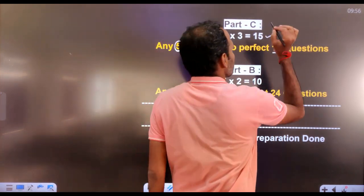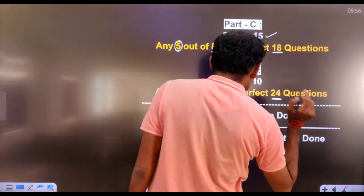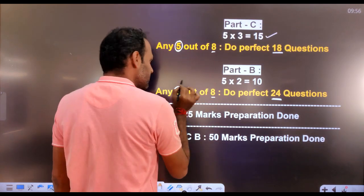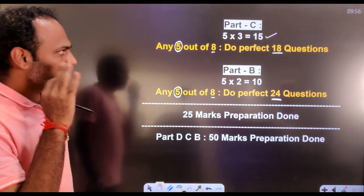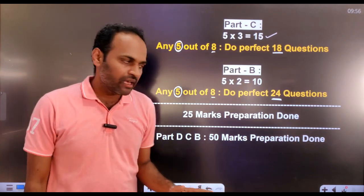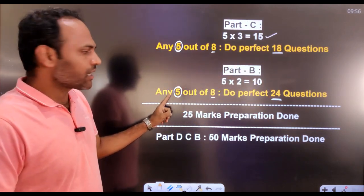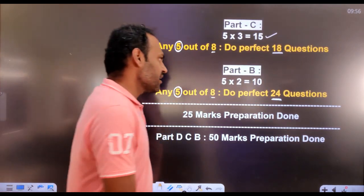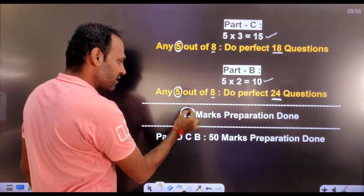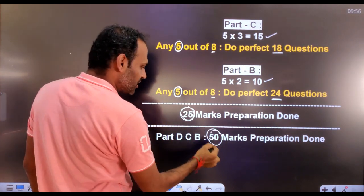You have to be ready for 15 marks in Part C. For 2 marks questions, there are 24 questions on the list. Out of eight, you have to solve any five questions — there are three extra choices again. In Part C you are having extra choices, nothing to worry. Do all these 24 questions perfectly and you will again attempt five questions. So 15 plus 5 equals 20 marks for Part C. Part D plus Part C plus Part B — 50 marks is the preparation.